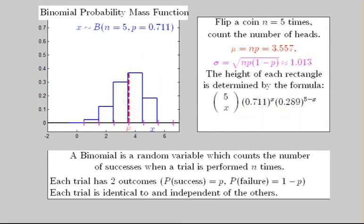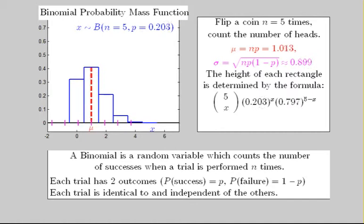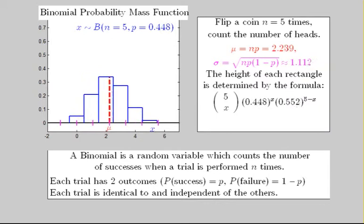As we said already, sigma is the square root of n times p times 1 minus p. The pink tick marks on the x-axis represent the number of standard deviations from the mean. For many, but not all distributions, most of the outcomes fall within 3 standard deviations of the mean.